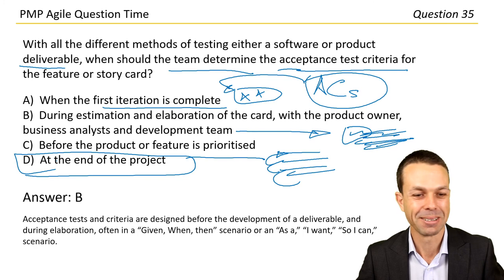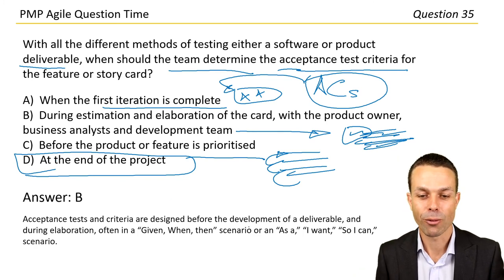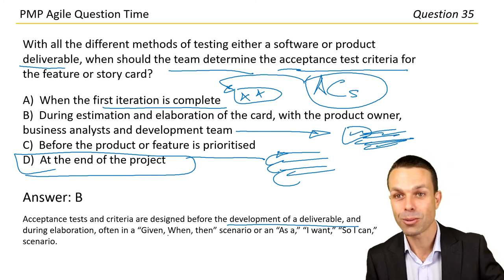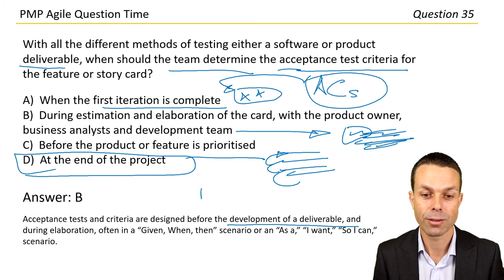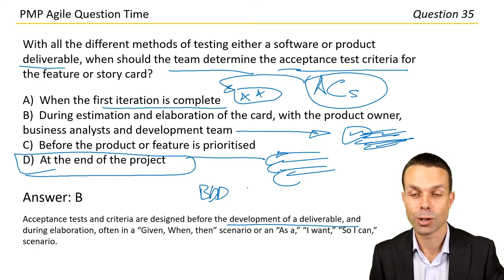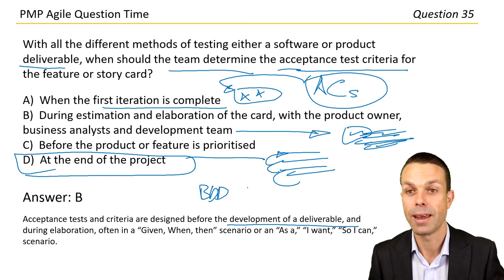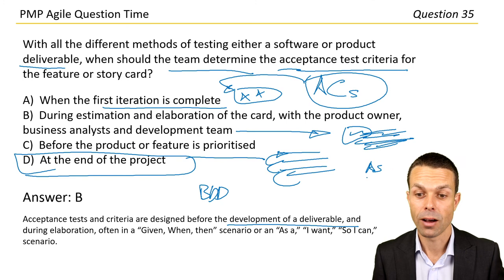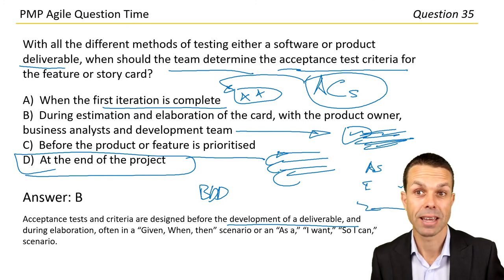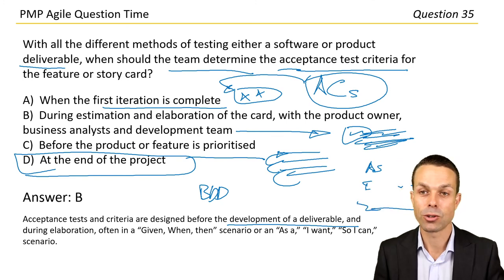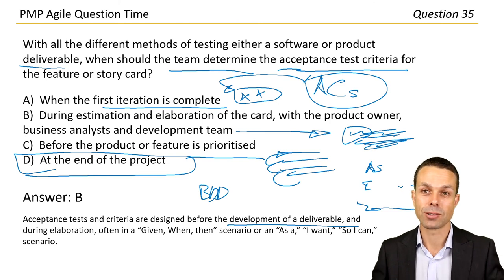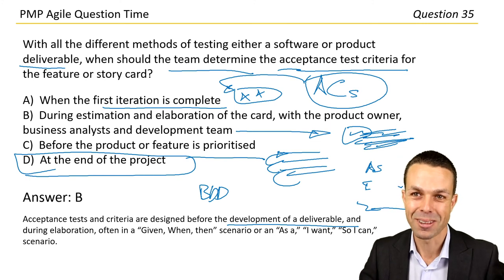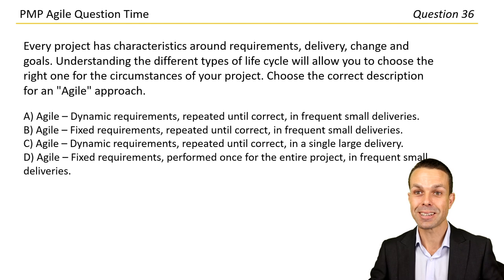Answer B: acceptance tests and criteria are determined before development of a deliverable, during elaboration, often in a given/when/then format from behavior-driven development — given a certain circumstance, when this happens, then I want this to happen. Another format is: as a customer, I want this so I can get this done. These are great ways to write acceptance criteria, done during estimation and elaboration of the card.